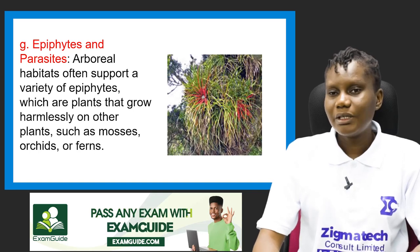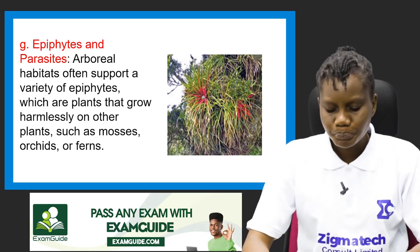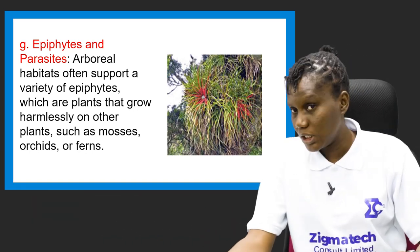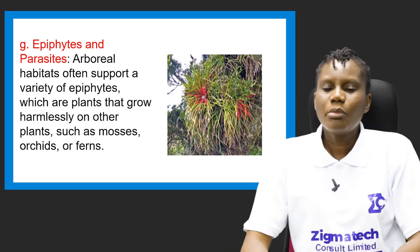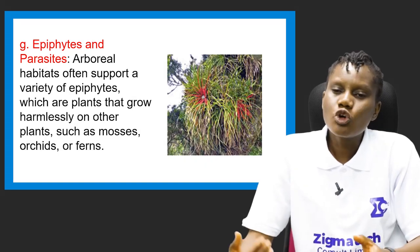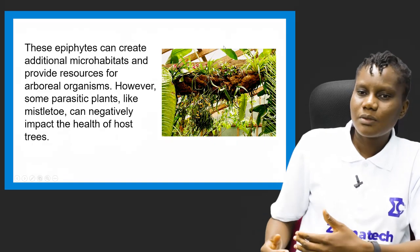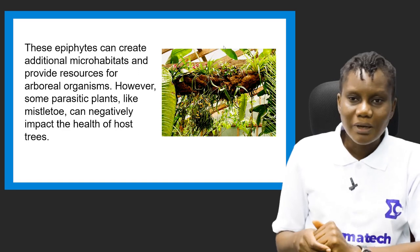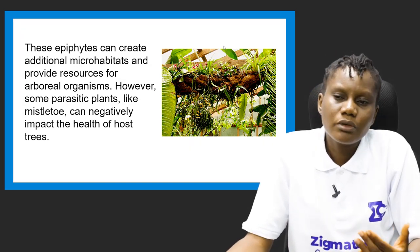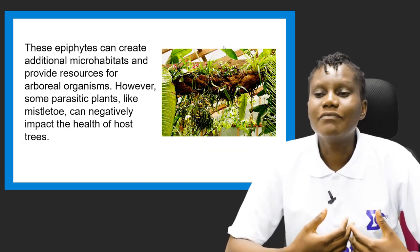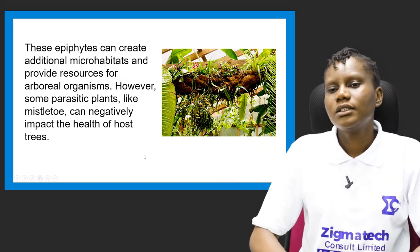The seventh factor is epiphytes and parasites. Epiphytes are plants that grow harmlessly on other plants — such as mosses, orchids, or ferns — representing commensalism. They can create additional micro-habitats and provide resources for arboreal organisms. However, some parasitic plants like mistletoe can negatively impact the health of host trees by sharing their nutrients, thereby reducing the tree's availability for other organisms.